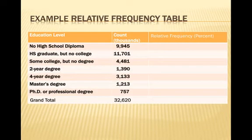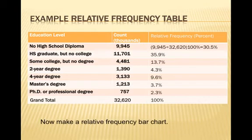We are going to add the relative frequency as a percent. We take the 9,945 thousands of seniors who do not have a high school diploma and divide by 32,620, then multiply by 100%, giving us 30.5%. I did the same process for the rest: 11,701 divided by 32,620 times 100% gives 35.9%, all the way down to 757 divided by 32,620 times 100%, which gives 2.3%.